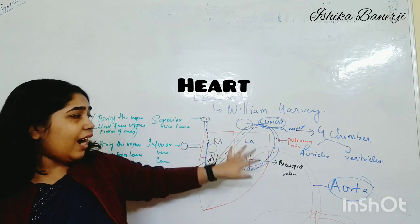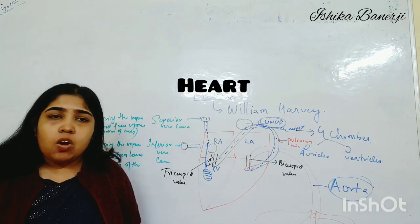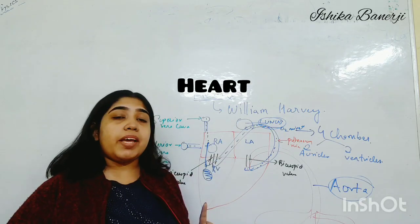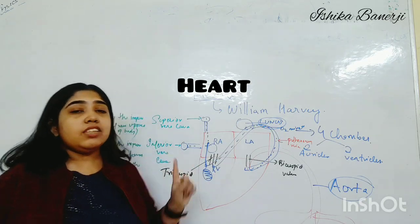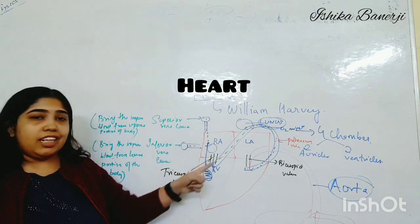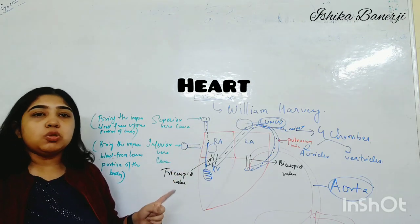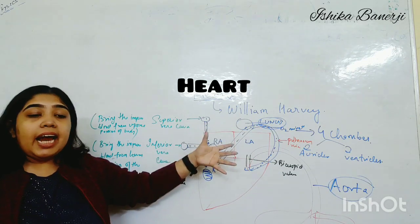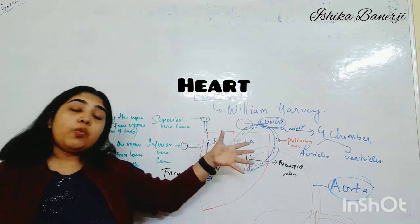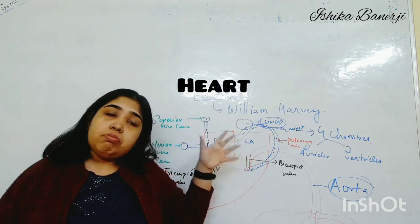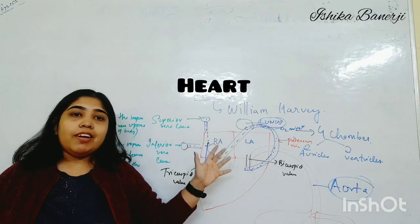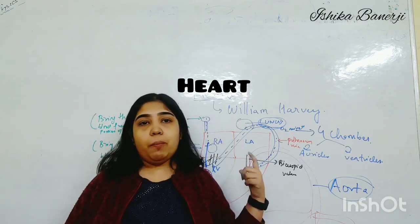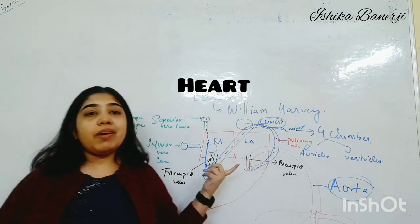Now, suppose the heart is not working properly. In that case, an instrument called a pacemaker is used — it is essentially an artificial heart support device. Many people have pacemakers because their heart is not functioning properly, and for that reason a pacemaker is required.